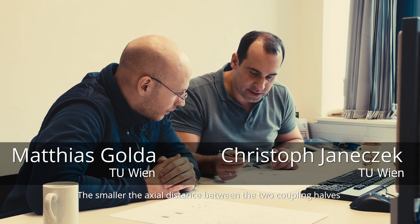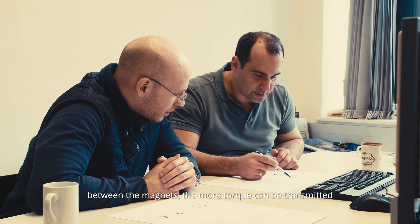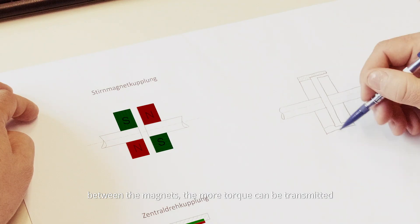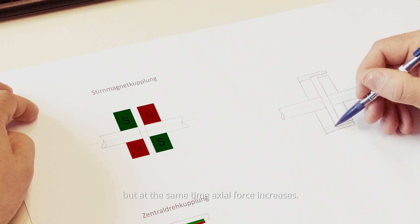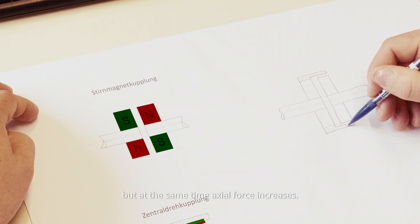The smaller the axial distance between the two coupling halves between the magnets, the more torque can be transmitted. But at the same time, axial force increases.